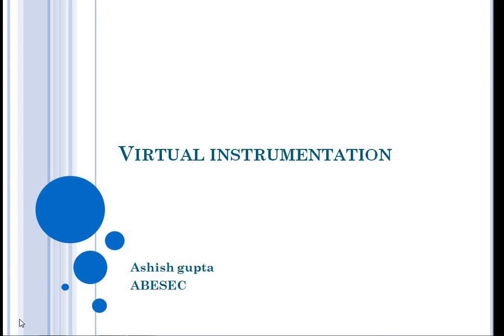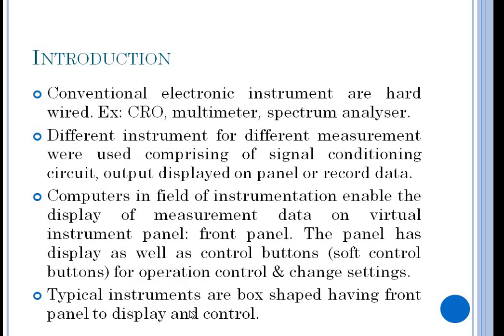In this lecture we are going to discuss virtual instrumentation. Conventional electronic instruments are hardware - as you have seen the cathode ray oscilloscope, multimeter, or spectrum analyzer. We have to connect wires from external sources and they are very big heavy boxes with a lot of circuits and electronics inside them. There is a separate instrument for separate work. An instrument is a device designed to collect data from an environment and display information to the user. In the CRO or multimeter there is a display device on the panel and there are some buttons or knobs.